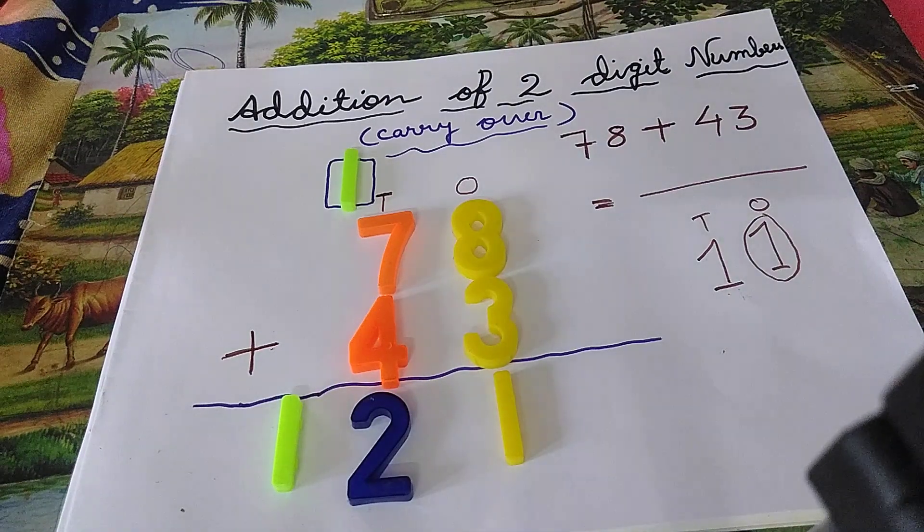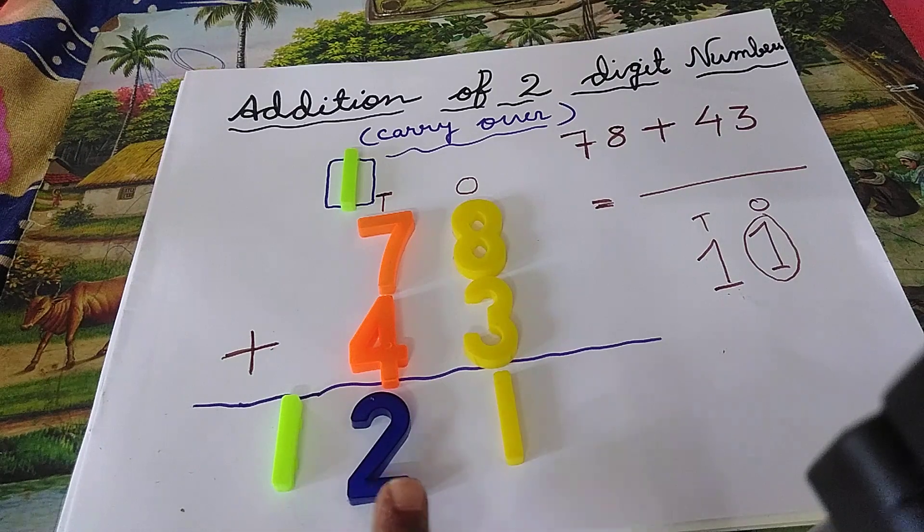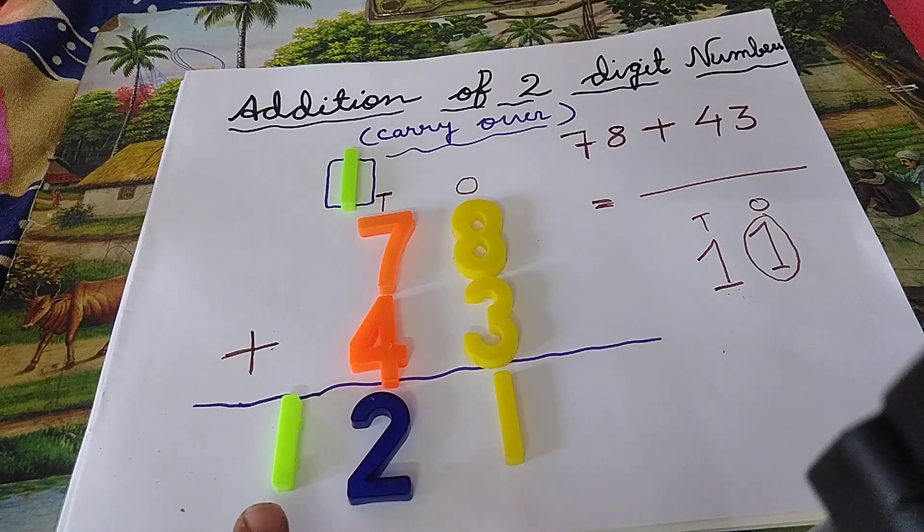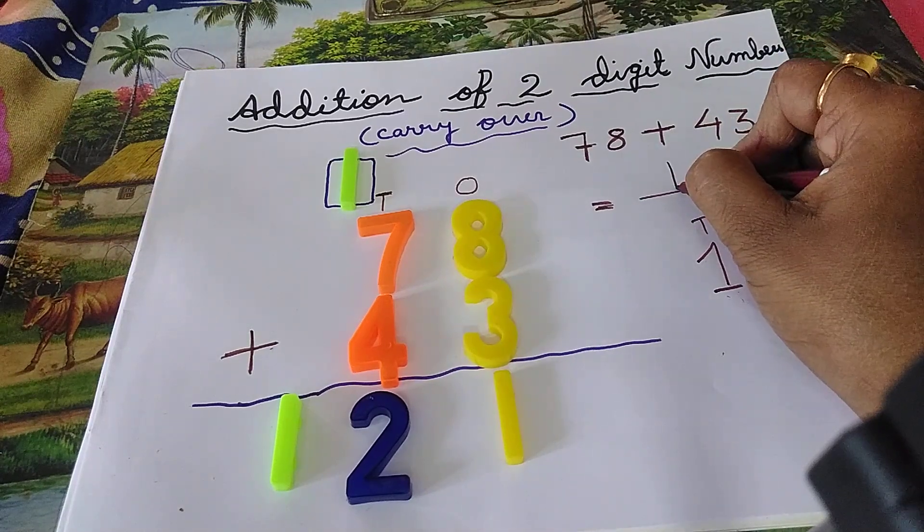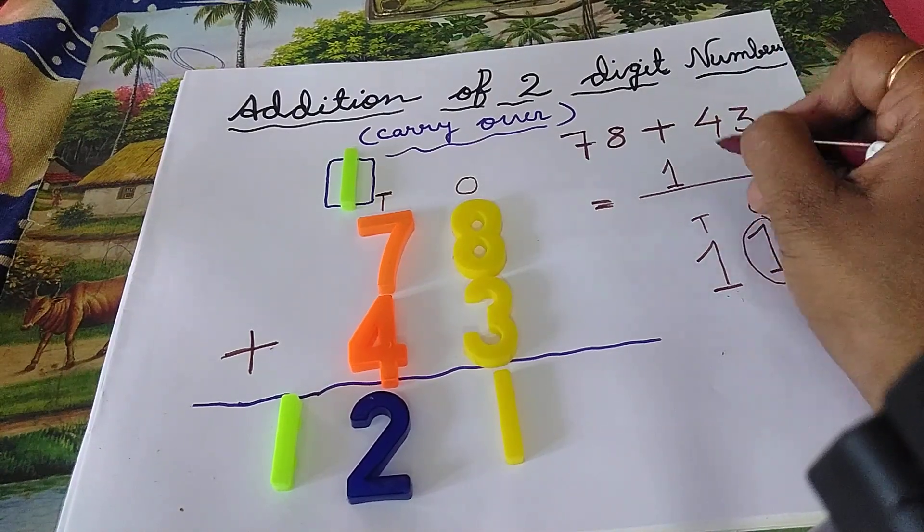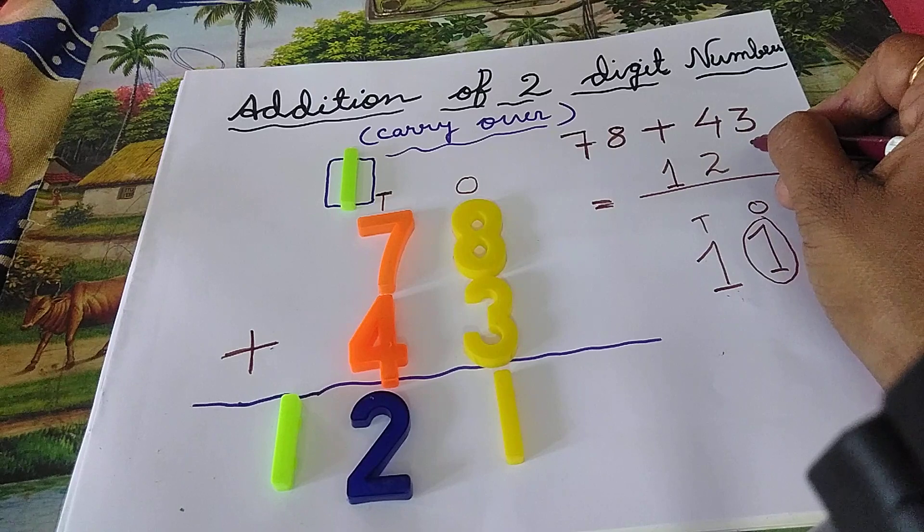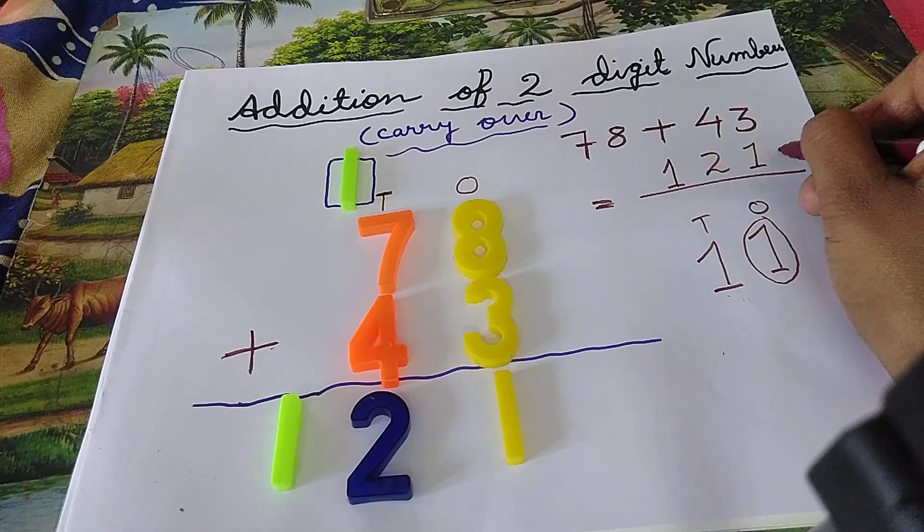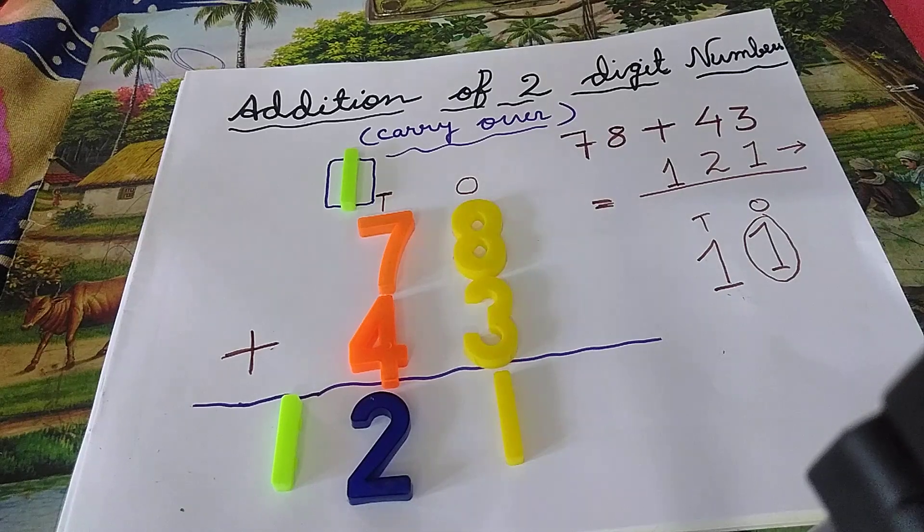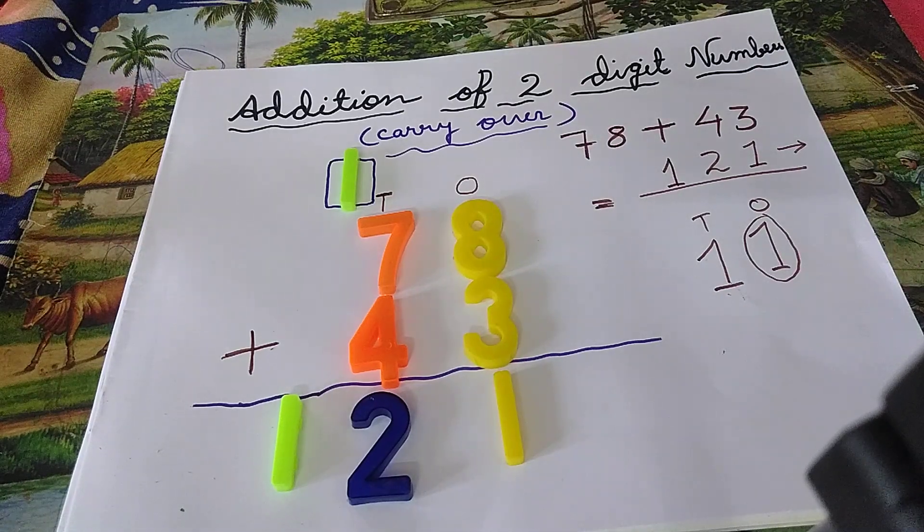So children, what is the answer? The answer is one, two, one. That is one hundred and twenty-one. Right here, one hundred and twenty-one. The answer is this. This is the answer part. Practice well children. Thank you.